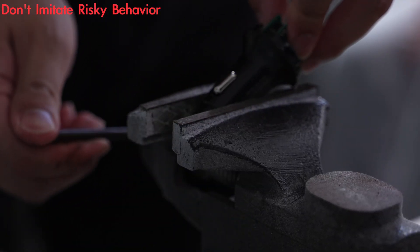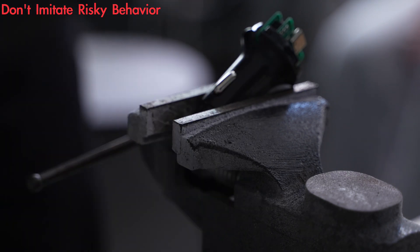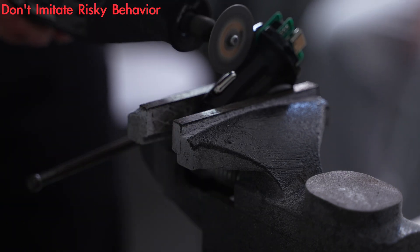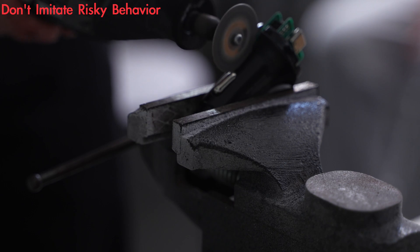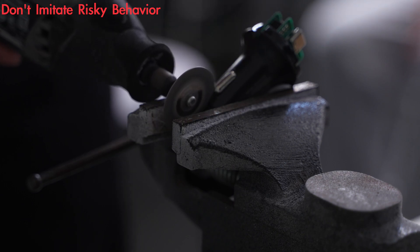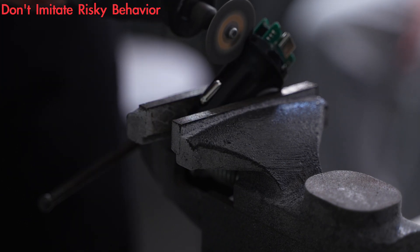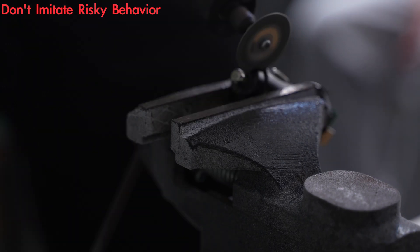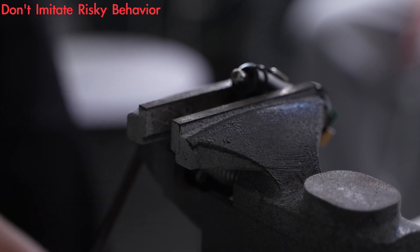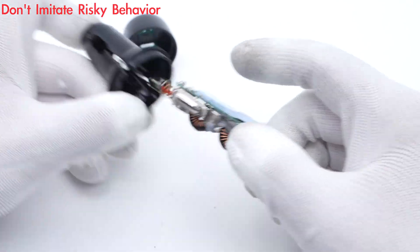Then, use the cutting machine to cut off the shell and take out the PCB module.